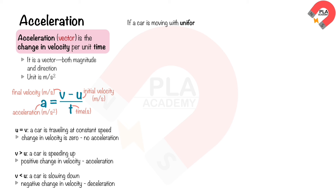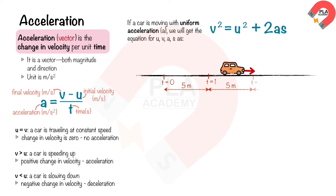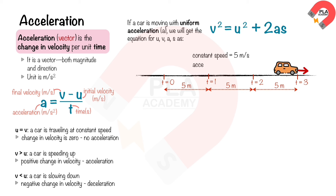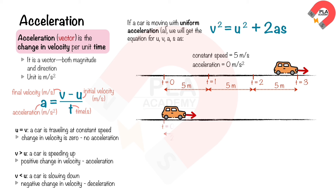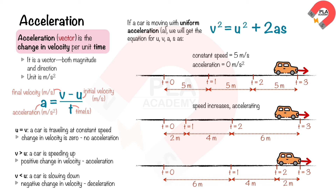If a car moves with uniform acceleration a, we get the equation: v² = u² + 2as. If a car moves the same distance of 5 meters every second, it is traveling at constant speed of 5 m/s and acceleration is zero. If a car moves with increasing distance every second, it is traveling with increasing speed and is accelerating. If a car moves with decreasing distance every second, it is traveling with decreasing speed and is decelerating.